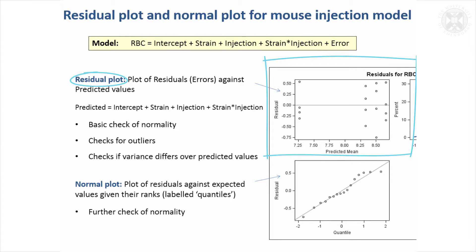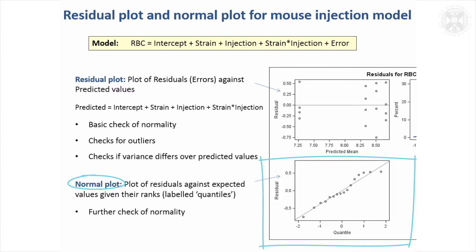So here there's nothing odd going on. It'll also help you highlight if there are any outliers in the data. You're always going to get a lowest or highest value, but none of these values have residuals that are much smaller or much higher than the others, so that was acceptable. And this is the normal plot of the residuals against their expected values given their ranks — you want that to follow roughly a straight line. It'll never follow exactly a straight line, but as long as it doesn't deviate too much. So that was acceptable for this study too.